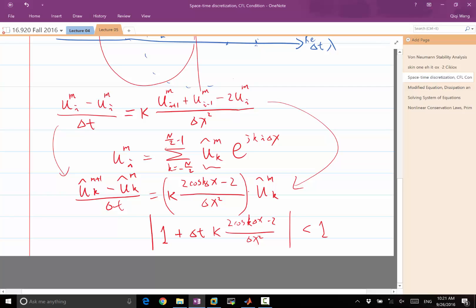But what about the k here? I cannot decide about this unless I know what k is. Kappa is given from the differential equation, but k is something we invented by doing the Fourier series. So how do I deal with the k?